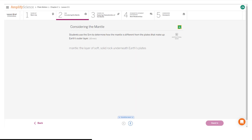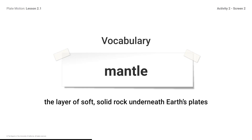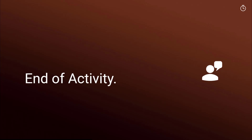Here's what your student screen looks like for this part of the lesson. Vocabulary — Mantle: the layer of soft solid rock underneath Earth's plates. Students, remember to look at the glossary if you need more support. End of activity: be sure to complete all your student work in Amplify for this activity before moving on.